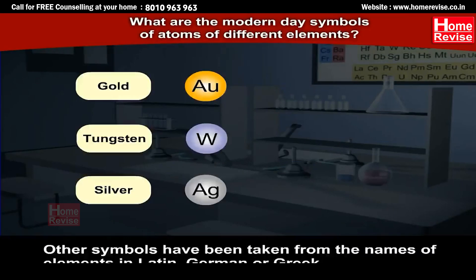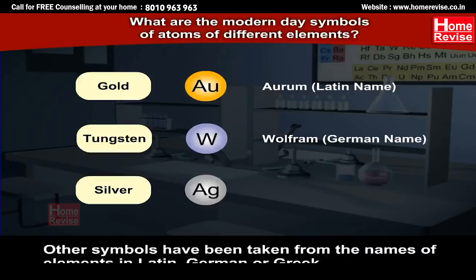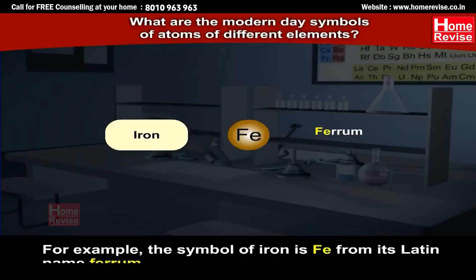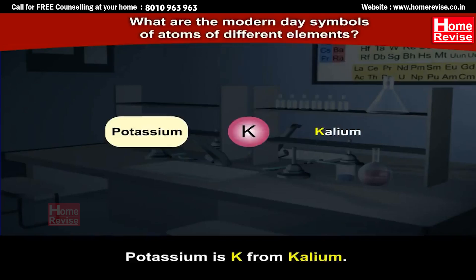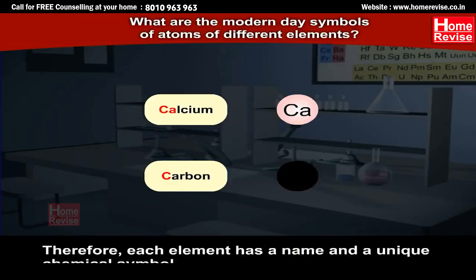Other symbols have been taken from the names of elements in Latin, German, or Greek. For example, the symbol of iron is Fe, from its Latin name Ferrum. Sodium is Na, from Natrium. Potassium is K, from Kalium. Therefore, each element has a name and a unique chemical symbol so that we don't get confused.